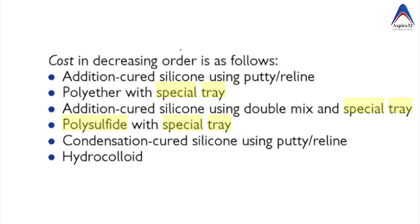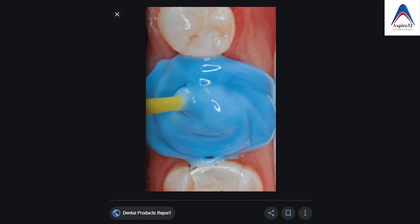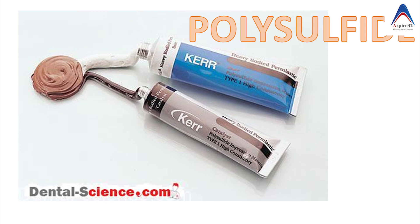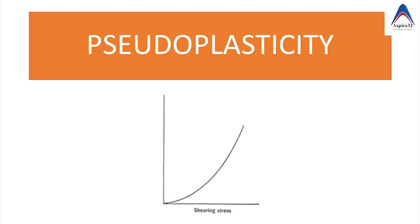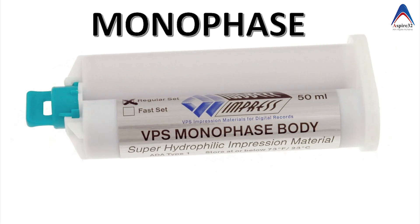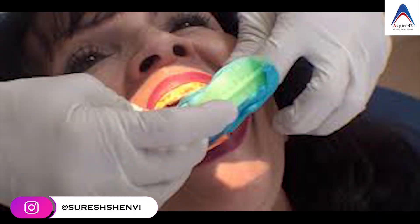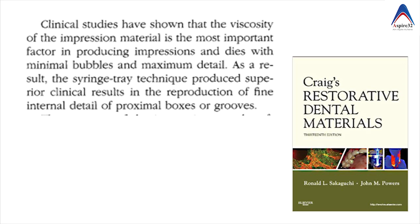Now let's learn about the ability to flow. If you have better flow in impression materials, they can reach areas better. Polysulphide has the highest flow. However, addition silicone and polyether have an important property called pseudo-plasticity, meaning that by increasing pressure you can increase the flow of these impression materials. This led to the introduction of monophase impression materials where a single viscosity material is used in both the tray and over the tooth, and under pressure the material flows better. Viscosity, or flow, is the most important factor for making impressions with maximum detail.